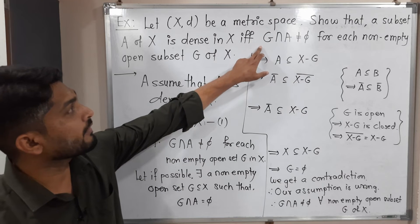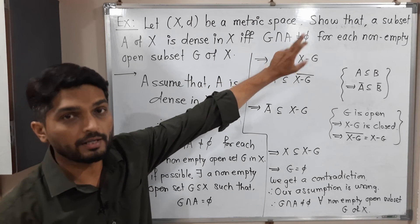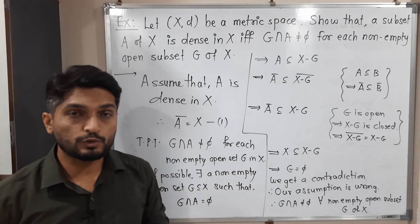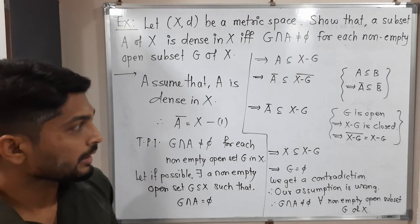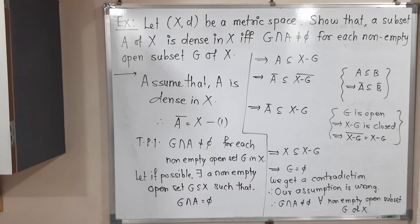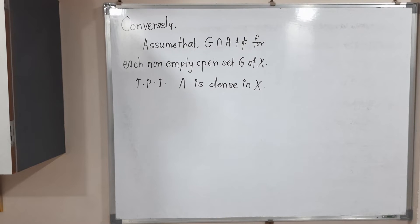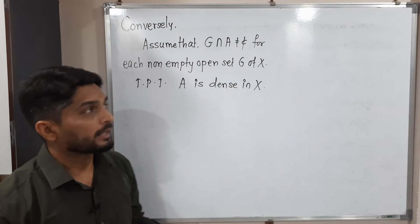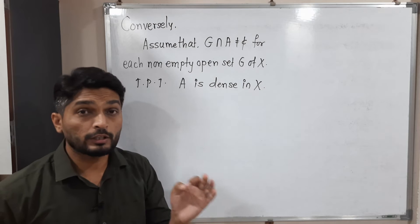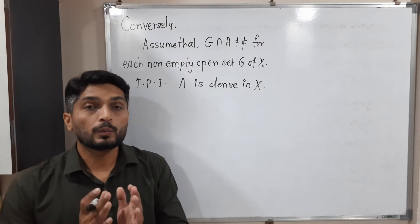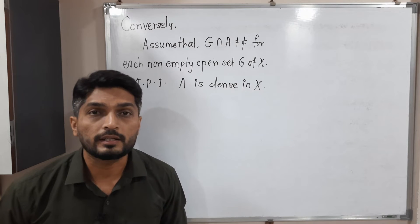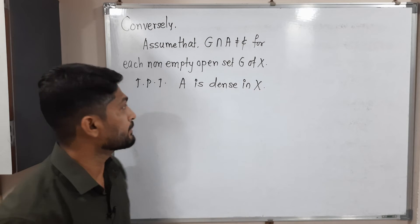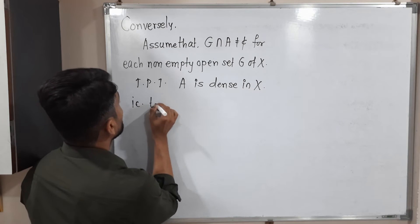Let us prove the second half — the converse. We assume G intersection A is not equal to phi for all non-empty open subsets G of X, and we have to prove that A is dense in X. What does dense mean? Dense means Ā equals X. So what we have to prove is that Ā equals X.